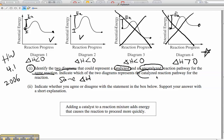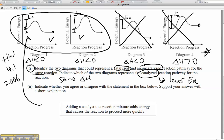And when they want to know the catalyzed one, that's going to be the one with the lower Ea. So here are our two, and the catalyzed reaction is this guy. So there's the catalyzed one. So we did that.